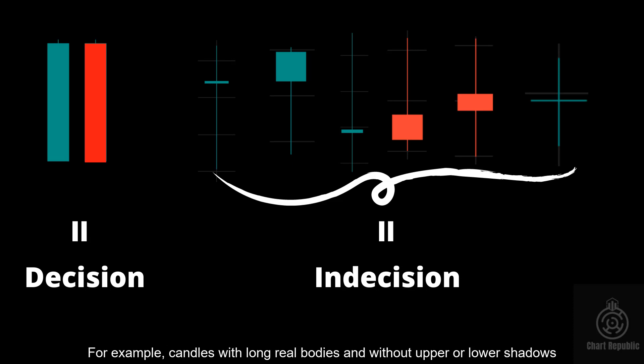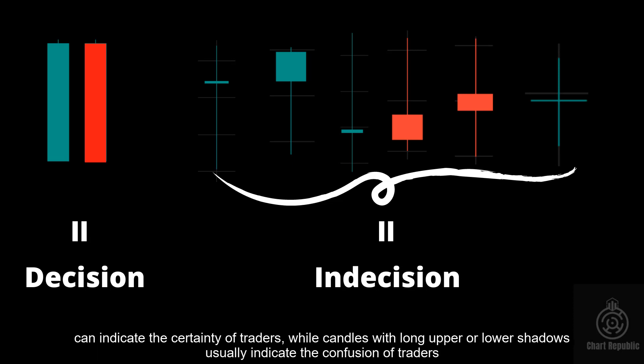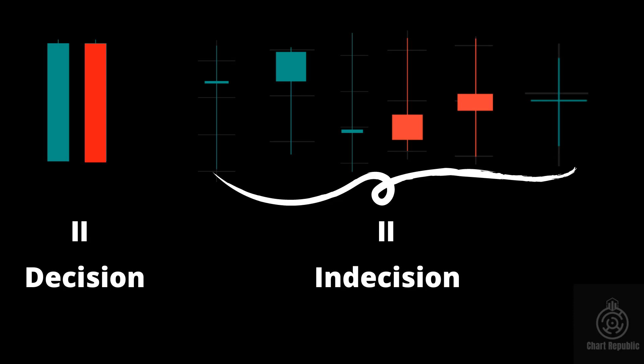For example, candles with long real bodies and without upper or lower shadows can indicate the certainty of traders, while candles with long upper or lower shadows usually indicate the confusion of traders.